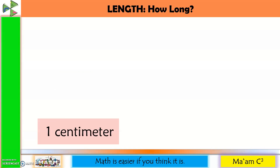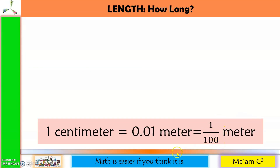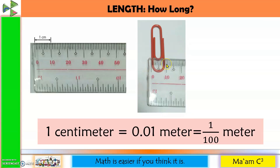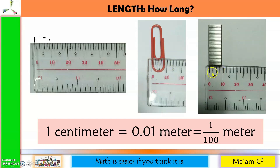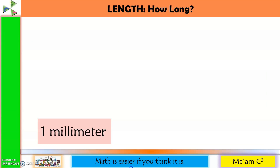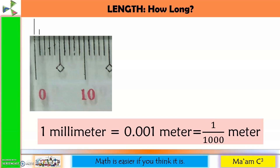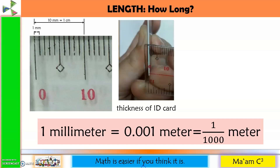One centimeter equals 1 meter divided into 100 equal parts. From 0 to the first centimeter mark on a ruler is 1 centimeter. A paper clip is almost 1 centimeter wide, and a staple wire is also about 1 centimeter in length. One millimeter equals 1 meter divided into 1,000 equal parts, or 0.001 meters — a very small measurement. From 0 to the first small line on a ruler is 1 millimeter; 10 millimeters equals 1 centimeter. An ID card is 1 millimeter thick, and 8 pieces of bond paper (substance 20) are also about 1 millimeter thick.